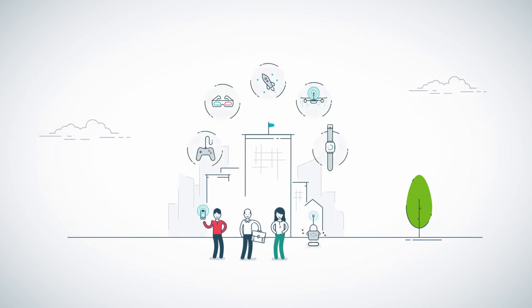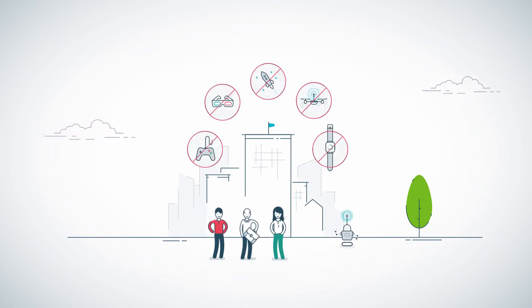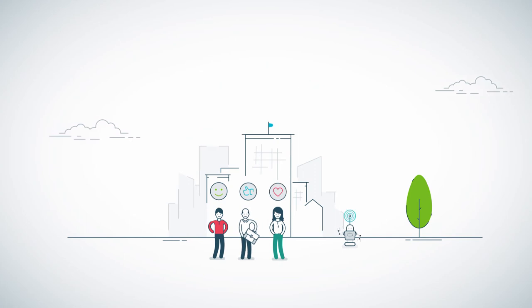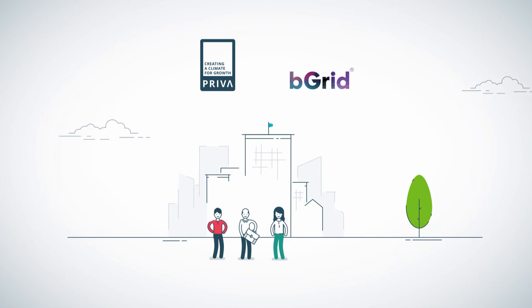Not a building filled with gadgets, but a building that actively supports the well-being of your people. Priva and BeGrid are the backbone of your smart building.